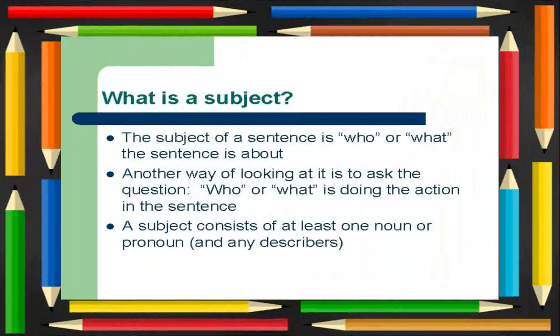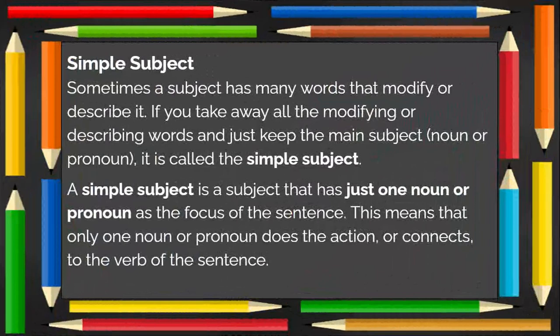What is a subject? The subject of a sentence is who or what the sentence is about. Another way of looking at it is to ask the question: who or what is doing the action in the sentence? A subject consists of at least one noun or pronoun and any describers. A subject has many words that modify or describe it. If you take away all the modifying or describing words and just keep the main subject — such as the noun or the pronoun — it is called the simple subject. A simple subject is a subject that has just one noun or pronoun as the focus of the sentence, meaning only one noun or pronoun does the action or connects to the verb.